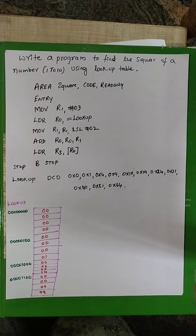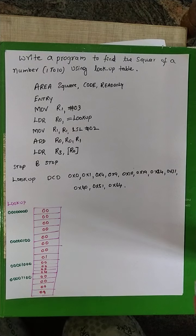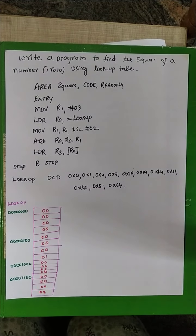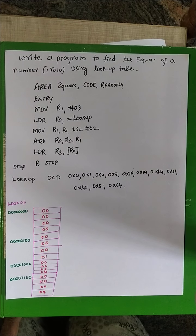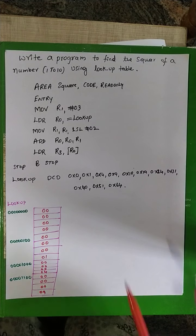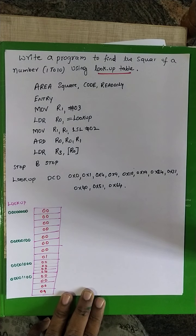Hi students. In this program we will study the square of a number from 1 to 10 using a lookup table. We already discussed finding the square of a given number in a previous program. This is a different question — it is finding the square of a number by using the lookup table.